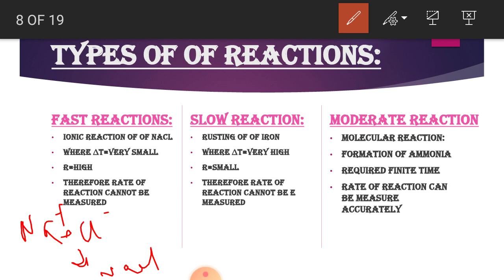The reaction which is very fast requires only minute fractions of a second. For that kind of reaction we cannot find the rate of reaction. The second type is slow reaction - that is your rusting of iron. Iron wire takes years to be rusted, so it requires very high time. For such a reaction, R is very small, so we cannot measure the rate of reaction.